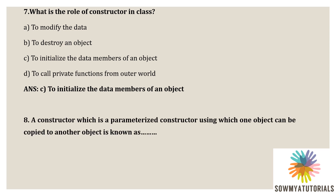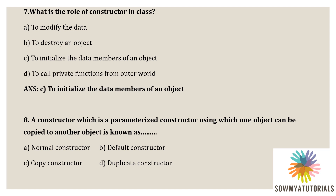Next question: a parameterized constructor using which one object can be copied to another object is also called what? The copy constructor is a parameterized constructor using which one object can be copied to another object — it is also called a copy constructor. The correct option is option C.